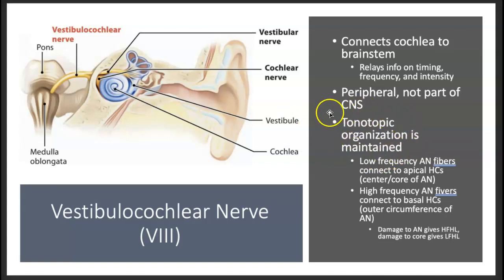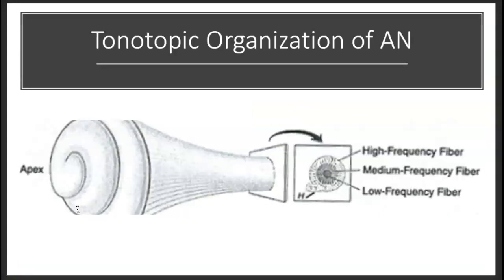And it's tonotopically organized just like the basilar membrane. So low frequency fibers are at the apex, and at the base you have high frequency fibers, same as the basilar membrane. And there you can see, inside of—those fibers that come from the base go to the outside of the auditory nerve because it's a high frequency fiber, and you can see that represented there. And then the low frequencies are on the inside of the auditory nerve. So that tonotopic organization that was present in the cochlea is preserved at the auditory nerve.